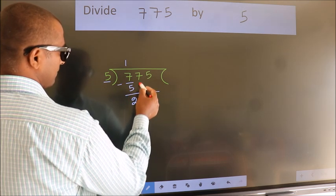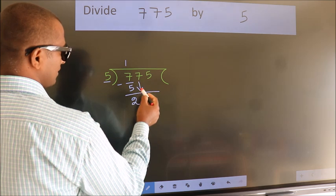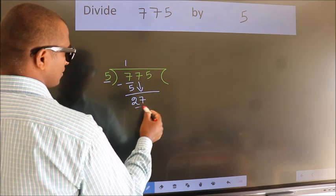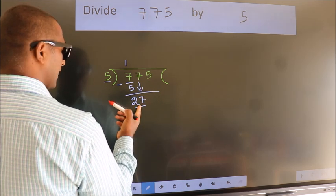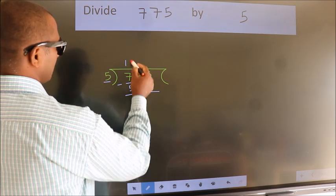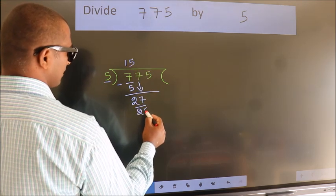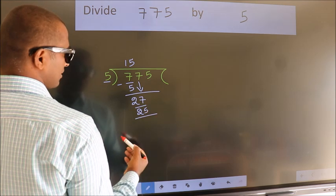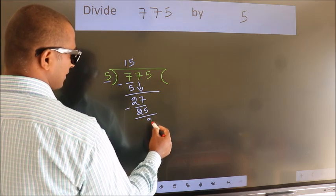After this, bring down the beside number. So, 7 down. So, 27. A number close to 27 in 5 table is 5 5s 25. Now, we subtract. We get 2.